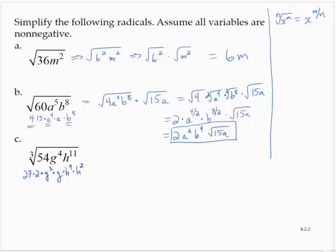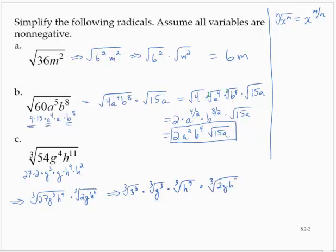So I'm going to break that up putting all the perfect cube factors in one radical and the non-perfect cube factors in the other radical. That's the cube root of 27 g cubed h to the ninth, times the cube root of 2g h squared. Breaking up that first radical: cube root of 27, which is 3 cubed, and then the cube root of g cubed, and then the cube root of h to the ninth, times the cube root of 2g h squared.